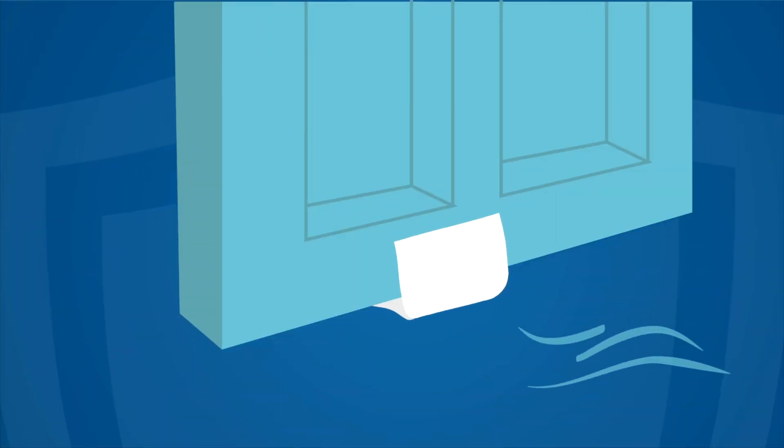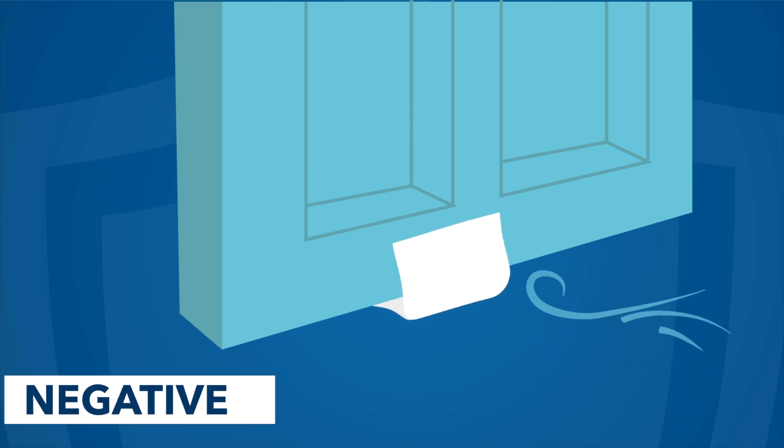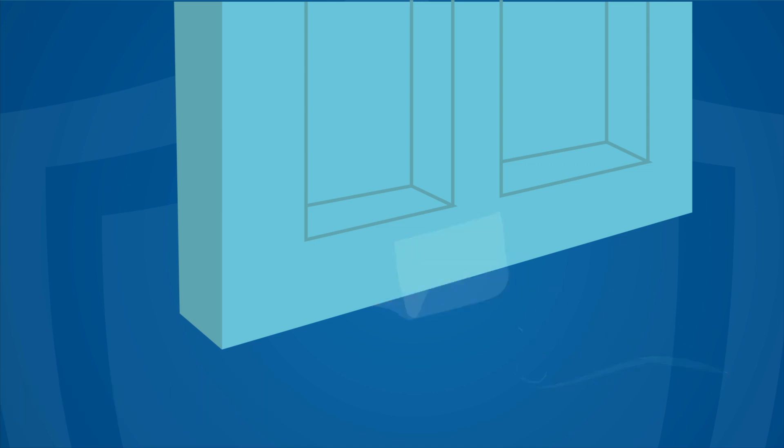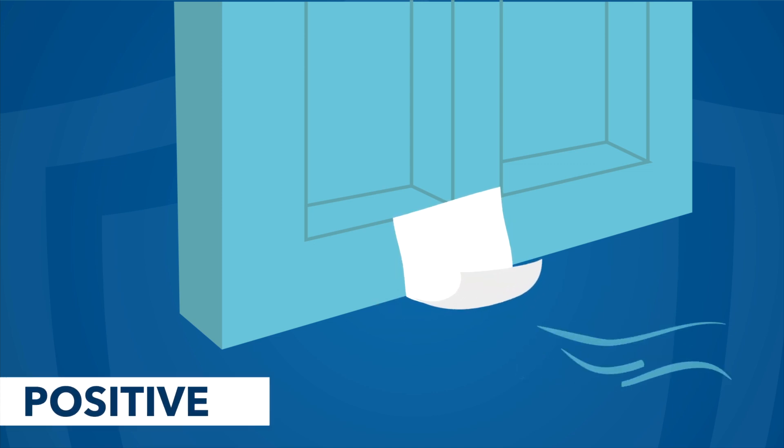If you are concerned about a room's pressure, you can quickly check to see if a room is positive or negative pressure by holding a tissue or piece of toilet paper at the bottom of the closed door. If the paper is sucking in, the room is negative. If the paper is blowing out, the room is positive.